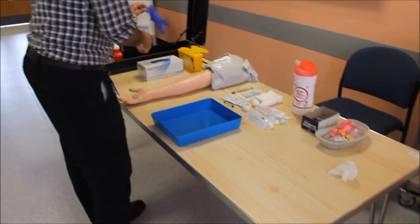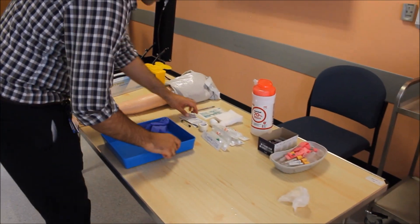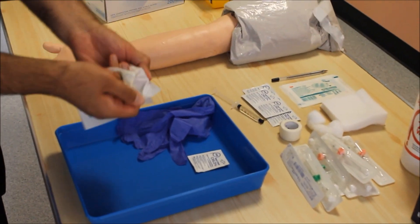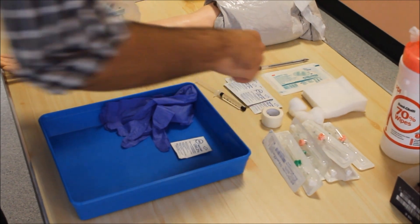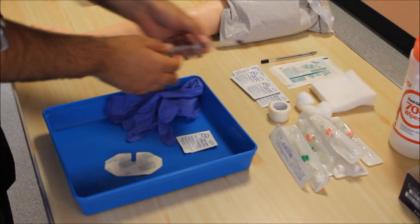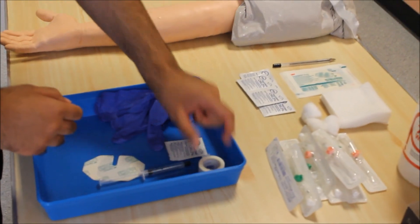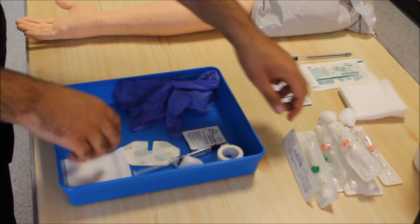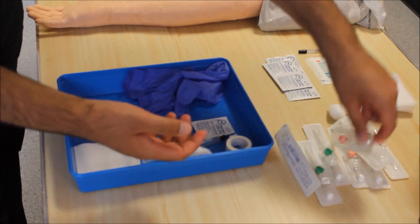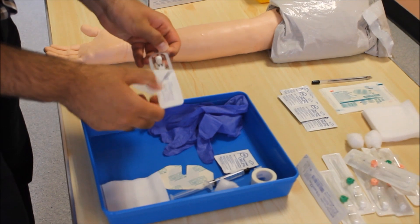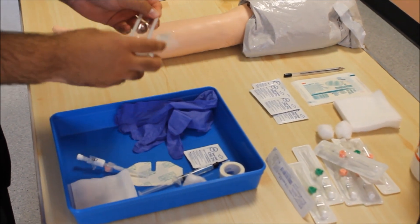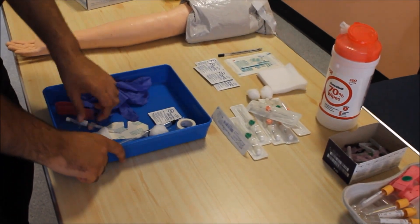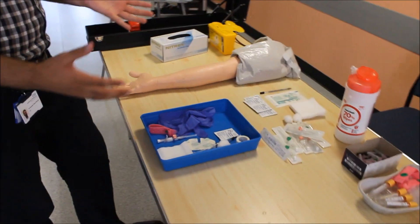After that, I will start preparing my tray with gloves, alcohol swab, Tegaderm, flush, tape, cotton, a bit of gauze, either a pink or green cannula, whichever you want according to the patient's ease. And most importantly, a tourniquet. So that's our tray prepared for IV cannulation.